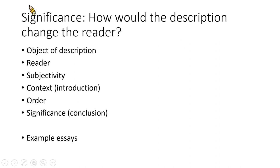After you finish describing the thing, you have to conclude the essay. You can't just end abruptly. The reader expects you to slowly put them down after picking them up to describe the thing. So how do you conclude a description essay? Think about why the description is important and how the reader is changed by having read it. For the smart bulb, the obvious answer would be: now if you have these needs yourself, you know what to buy in order to satisfy them.